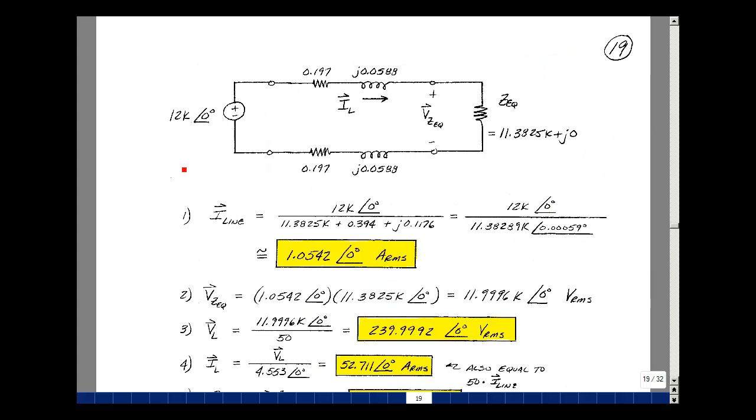Our step-up transformer has converted our 240 volts RMS into 12,000 volts, hooked it up to a wire, and then our step-down transformer and our load, and then a return wire. Let's find the current in the wires.